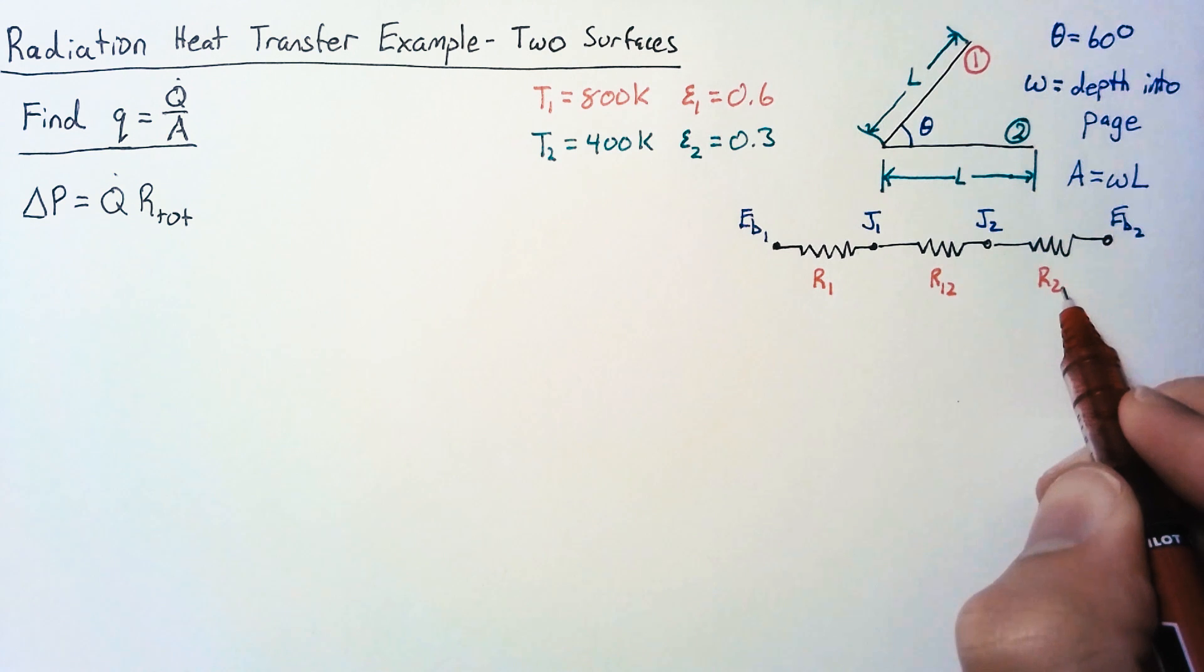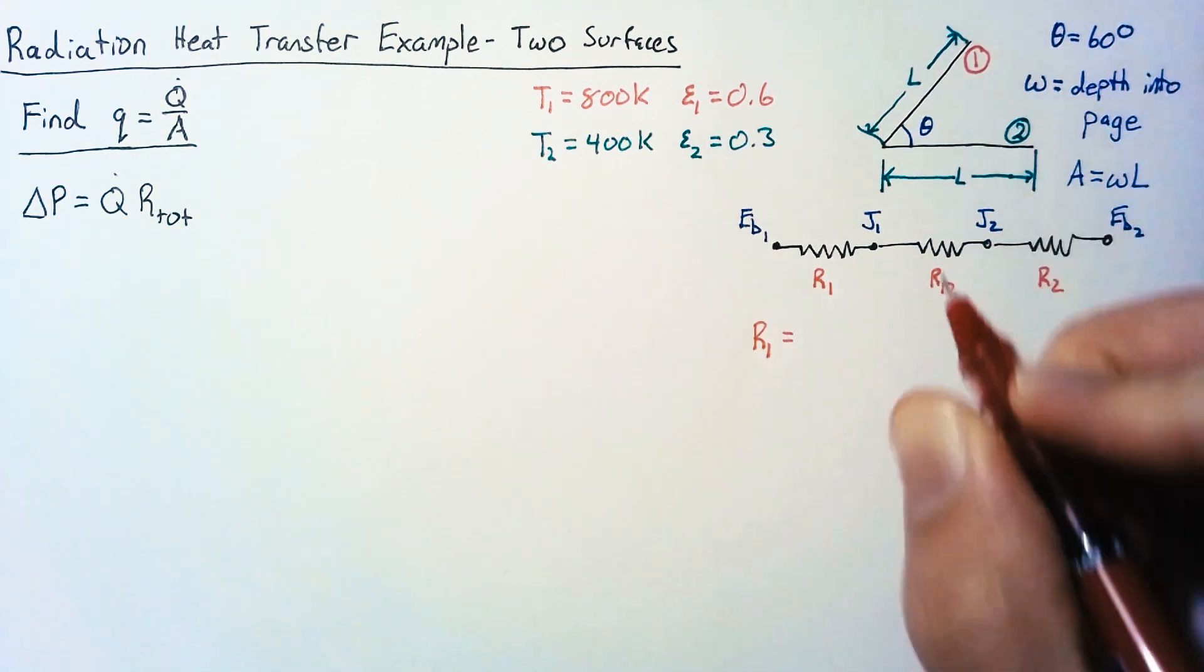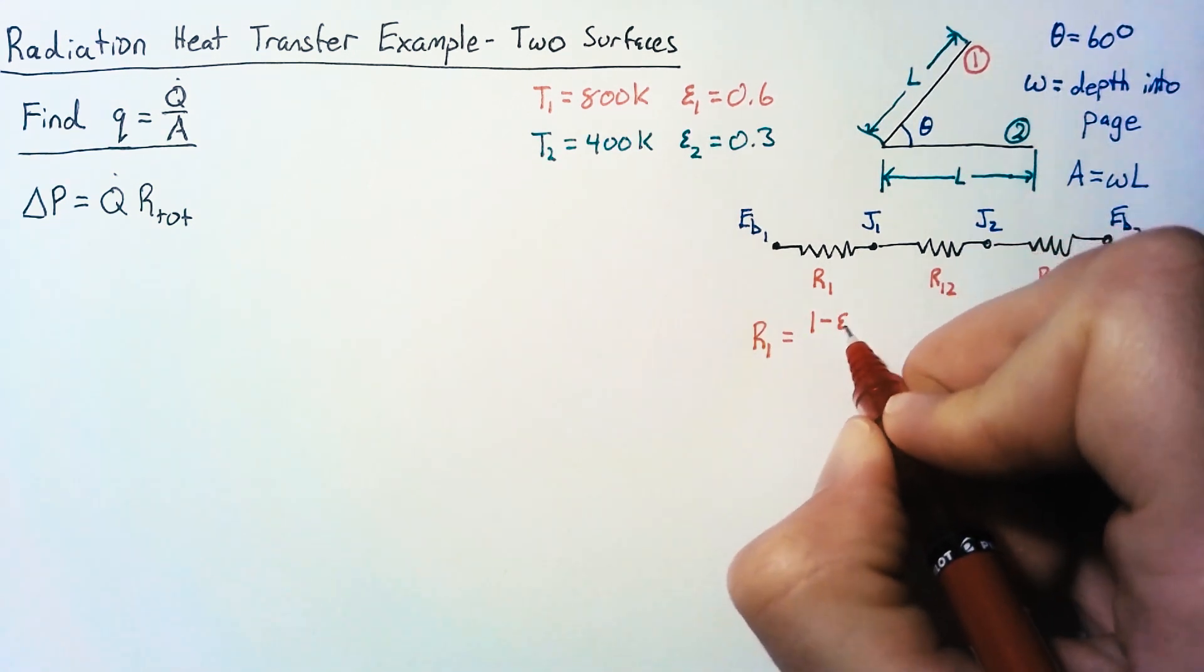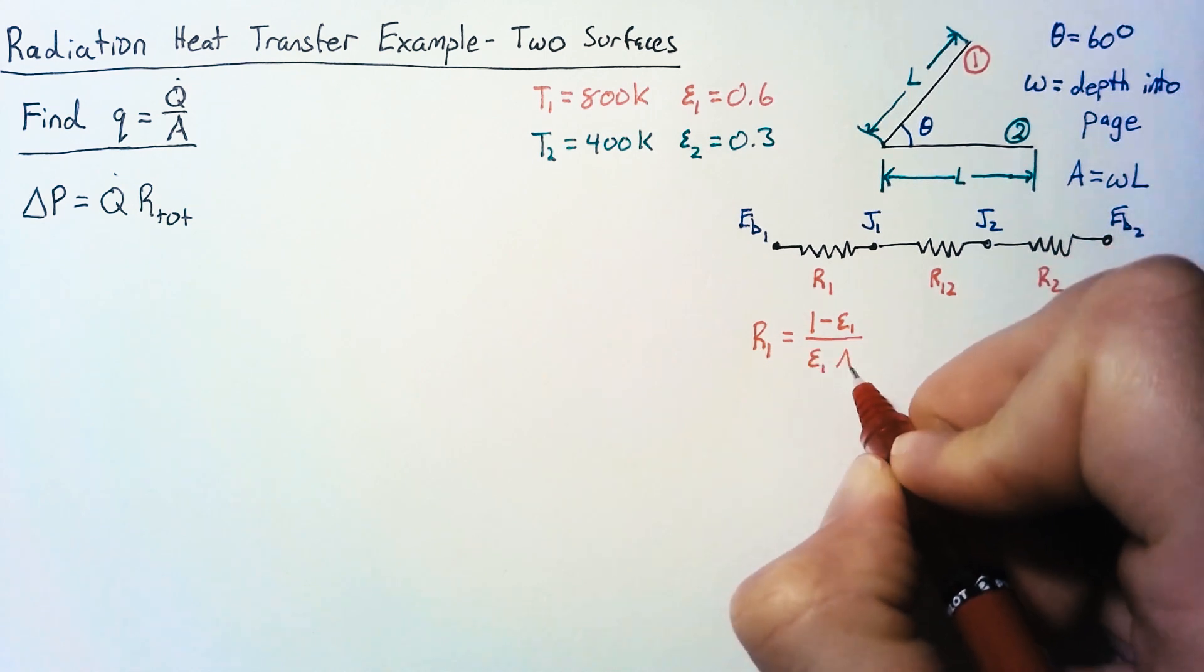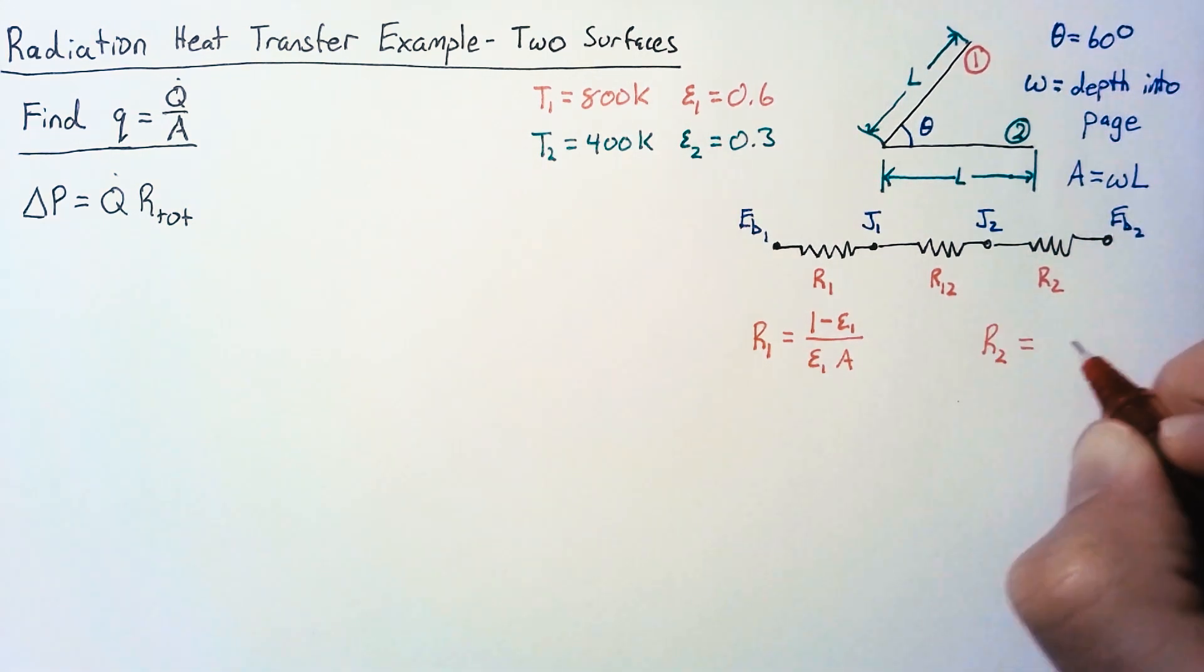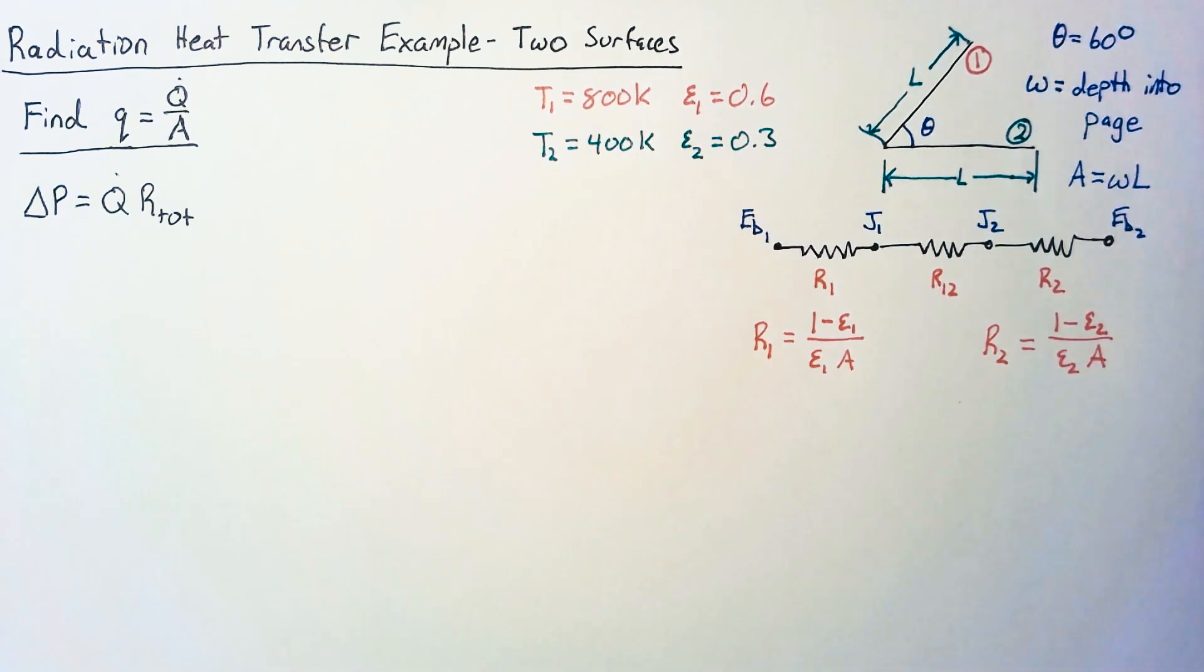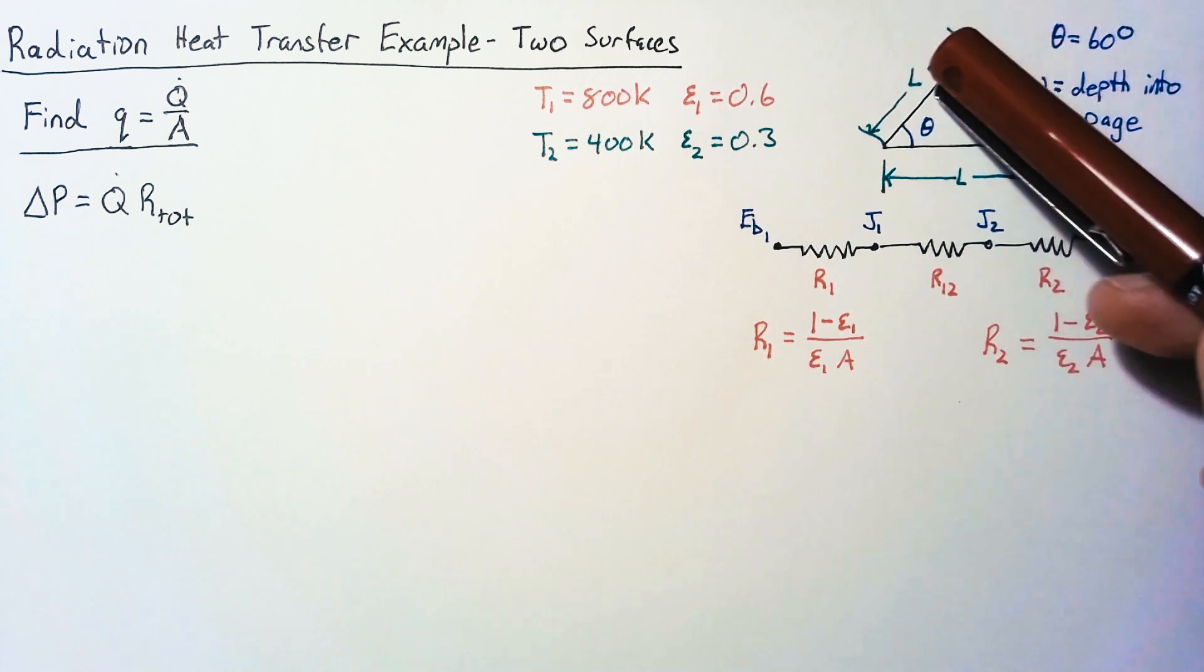R1 and R2 are our surface resistances. And we can write R1 as 1 minus epsilon 1 over epsilon 1 A. Likewise, R2 will be 1 minus epsilon 2 over epsilon 2 A. And I'm able to use this general A, since our surfaces have the exact same area.